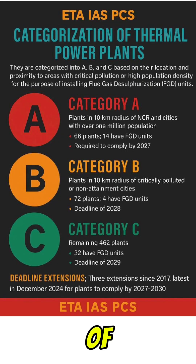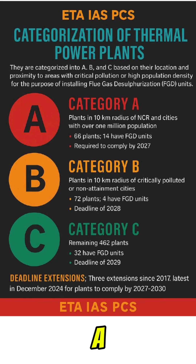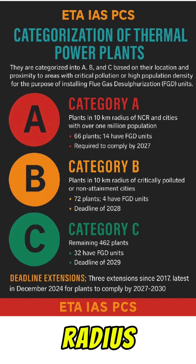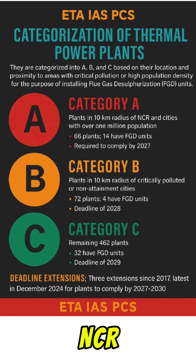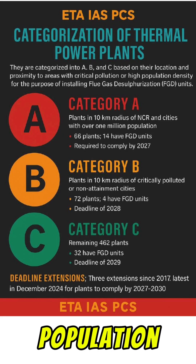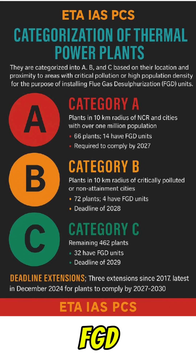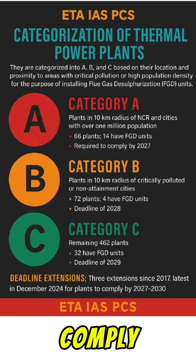Regarding the categorization of thermal power plants — Category A includes plants within a 10 km radius of the NCR and cities with over 1 million population. This includes about 66 plants, of which 14 have FGD units installed, and they are required to comply by 2027.